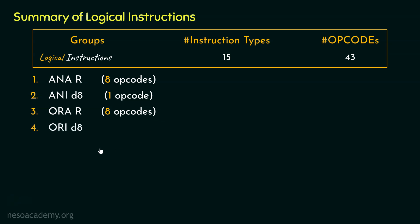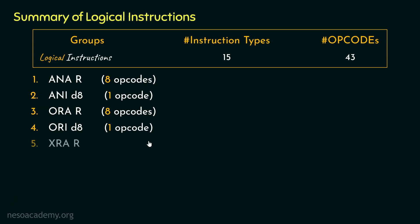The next type of instruction was ORID8 — OR immediate 8-bit data with the content of the accumulator. This is similar to ANID8, with the only difference being that ORID8 performs the logical OR operation. For this instruction type there is only a single opcode.